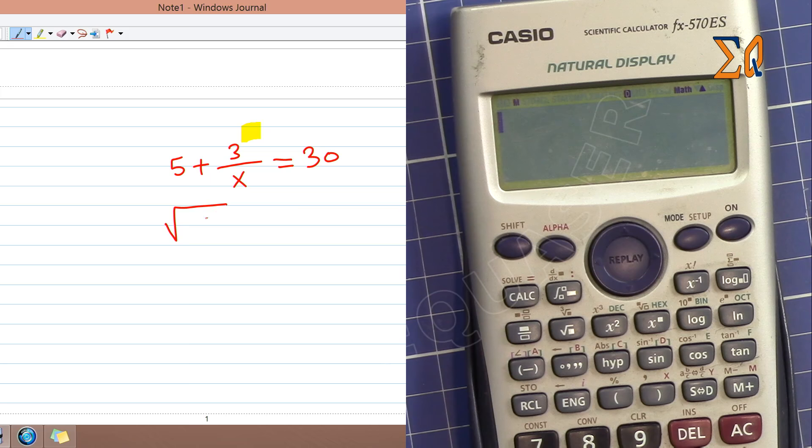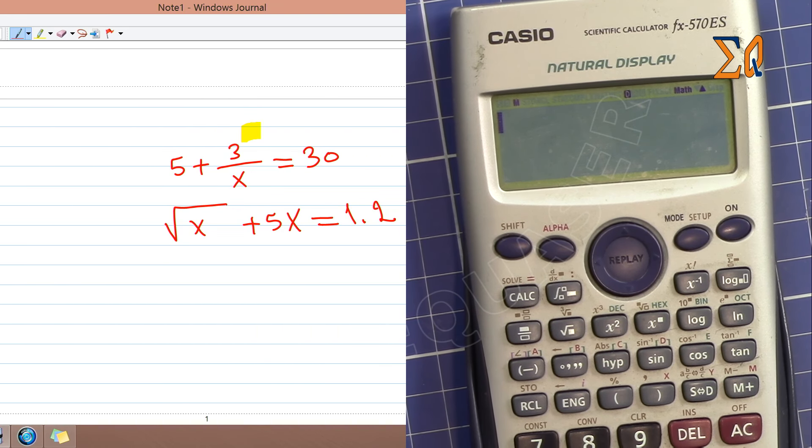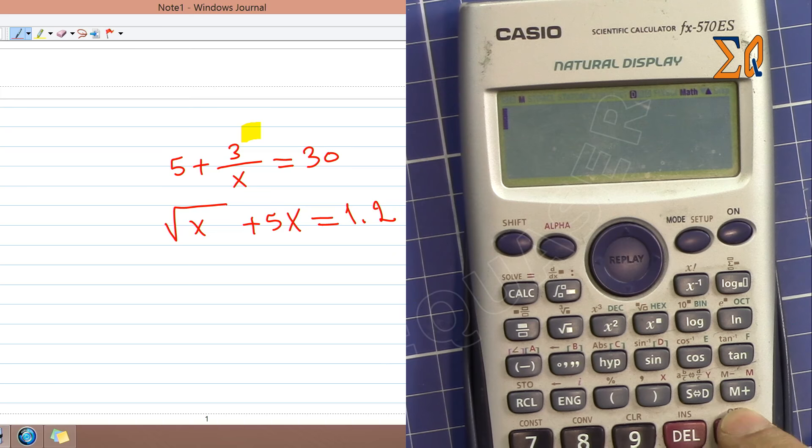And let's say square root of x plus 5x equals 1.2. In this case we have 2x in our equation. Yet we will try to see if this calculator can solve it.